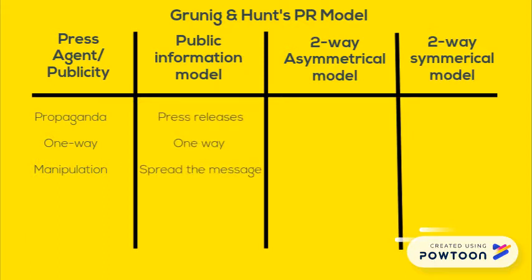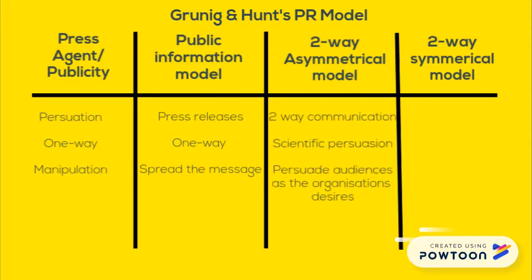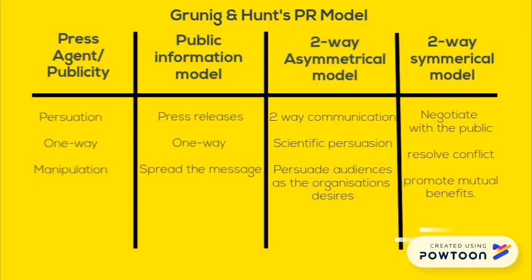The public information model is also one-way communication, but it is like spreading out a message among audiences. The two-way asymmetrical model is two-way communication that uses scientific persuasion and manipulation to influence audiences to behave as the organization designs. The two-way symmetrical model is two-way communication that uses communication to negotiate with the public, resolve conflict, and promote mutual understanding and respect between the organization and its stakeholders.